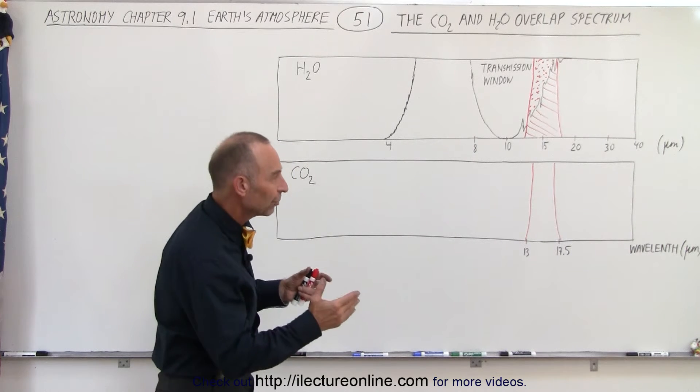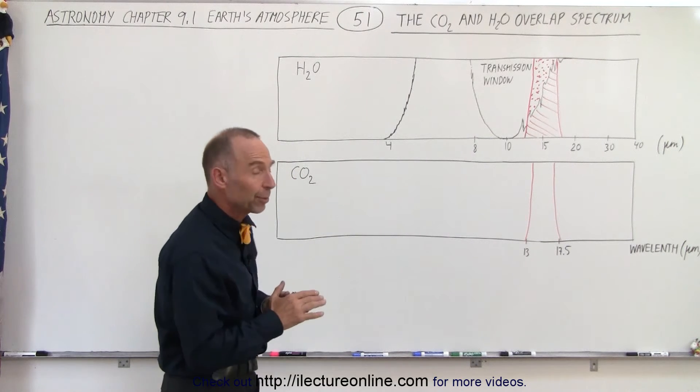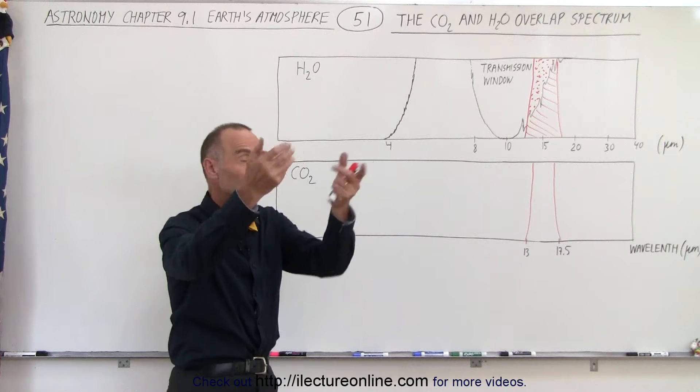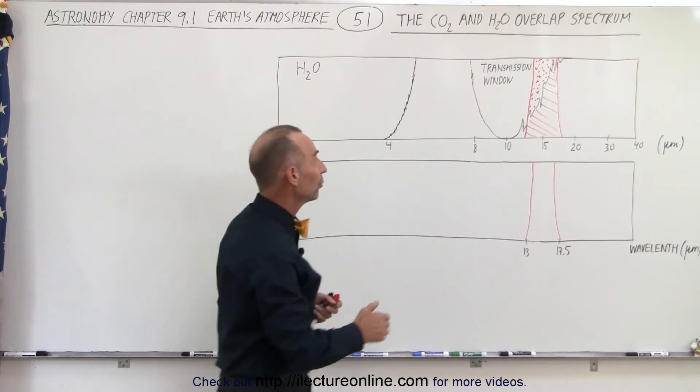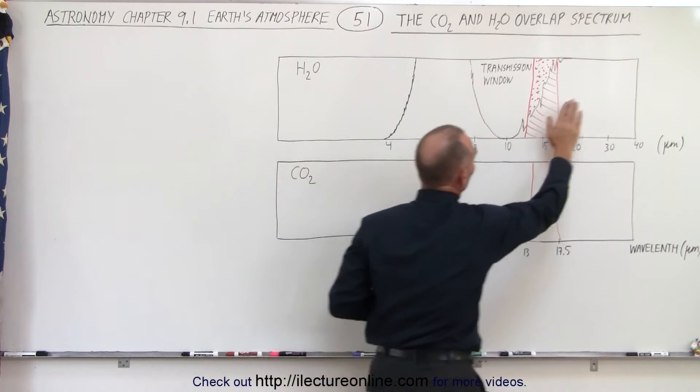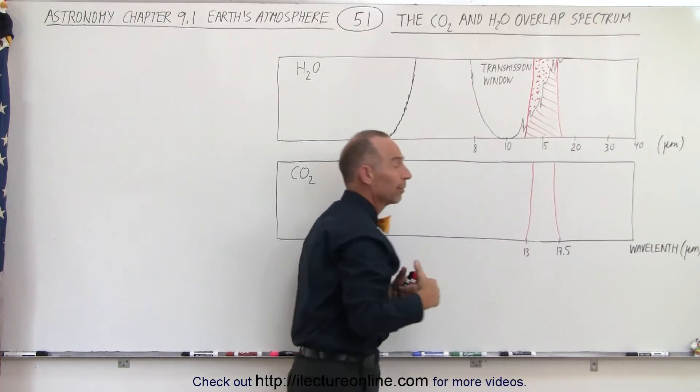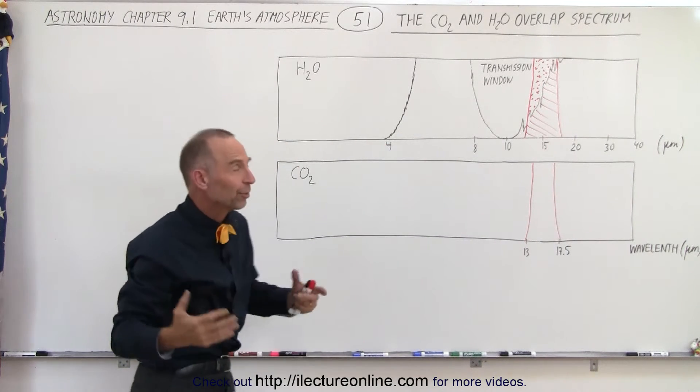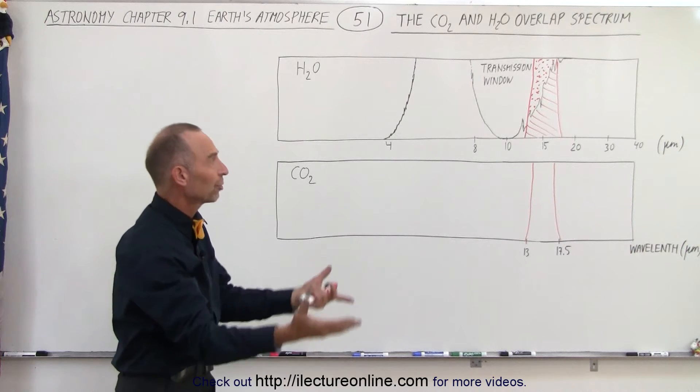But what happens when we compare that to the absorption spectrum of water vapor for radiated energy coming from the surface of the earth? Notice there's two main regions, one right here and one right here, where water vapor absorbs just about 100 percent of all the radiation coming from the surface of the earth.